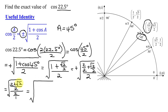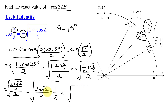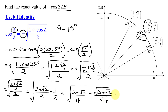Now these have the same denominator, so I can add the numerators. I get 2 plus the square root of 2, over 2 — that's my numerator — divided by 2. Now I can divide my fractions: take the fraction in the numerator, 2 plus the square root of 2 over 2, and multiply it by the reciprocal of the fraction in the denominator. The reciprocal of 2 over 1 is 1 over 2. So I get 2 plus the square root of 2, all divided by 4. I can simplify the denominator: square root of 2 plus the square root of 2, all divided by the square root of 4, which is 2. So that is the exact value of the cosine of 22.5 degrees.